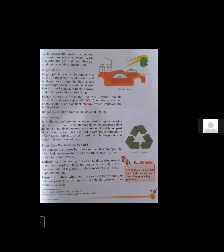Now let's start today's topic: how can we reduce waste? Open page number 17. We can reduce waste by following the three R strategy. The three R's are: reduce, reuse, and recycle. By adopting these three R principles, we can manage the waste problem. These are simple steps that can be followed to reduce waste.